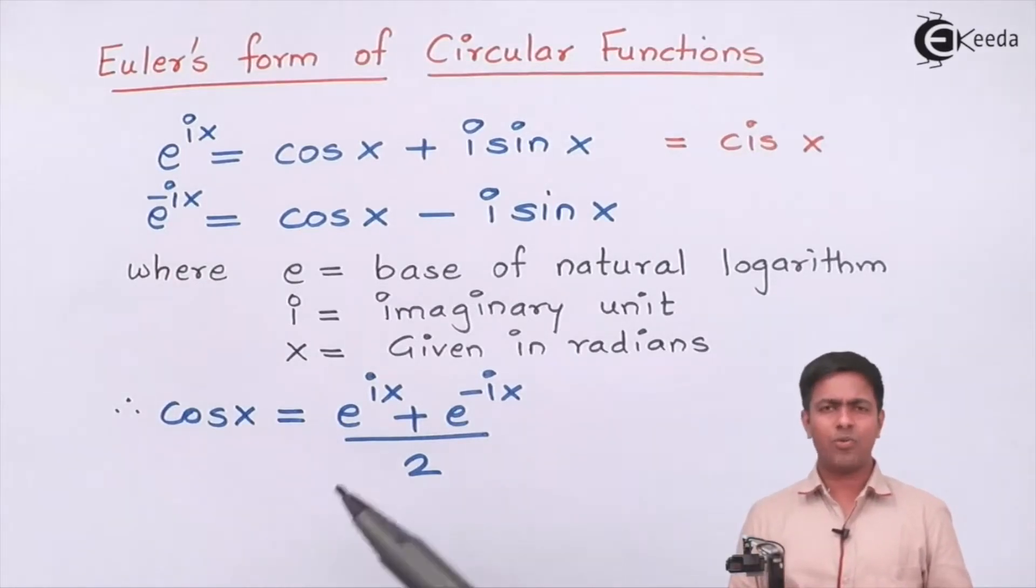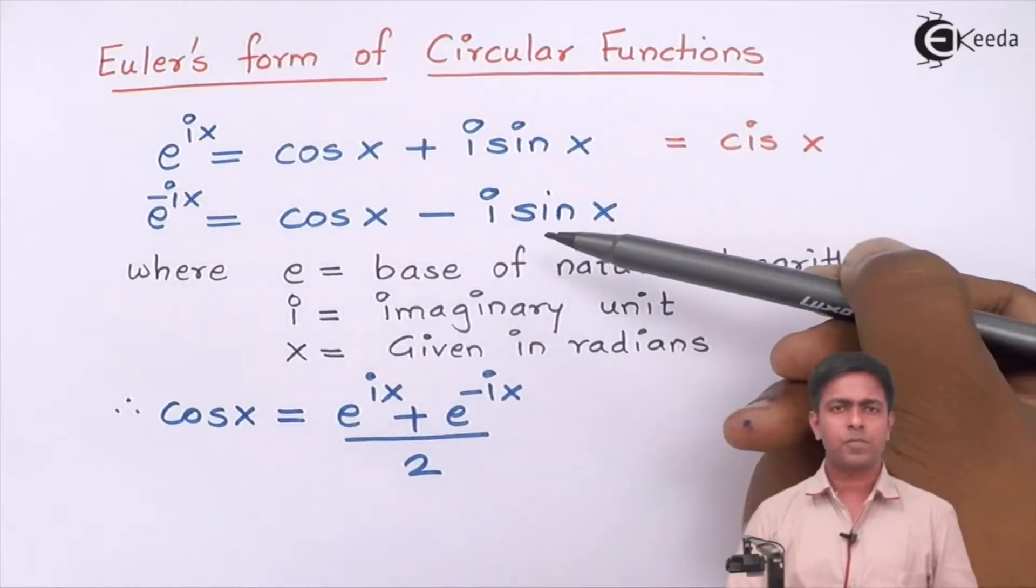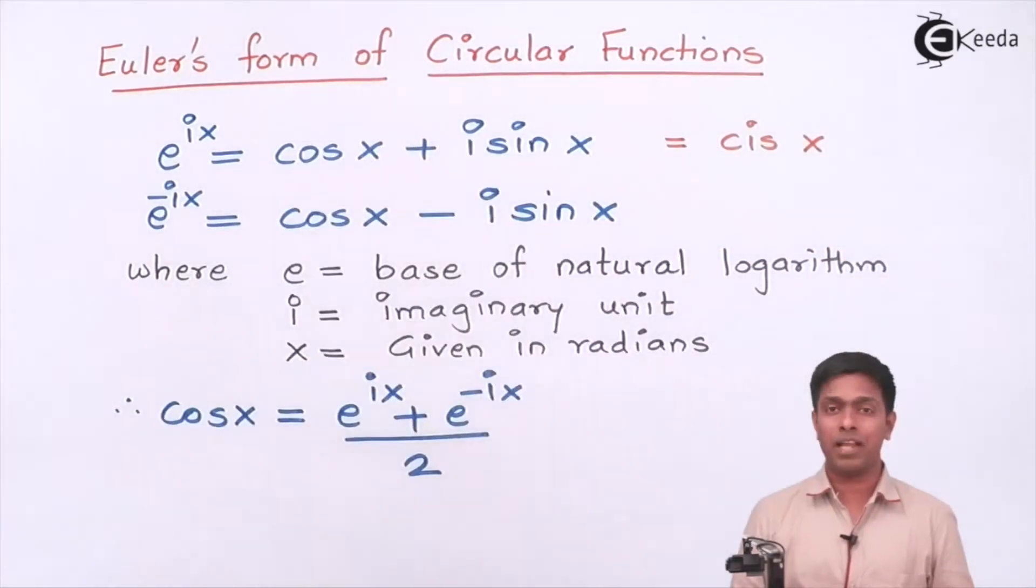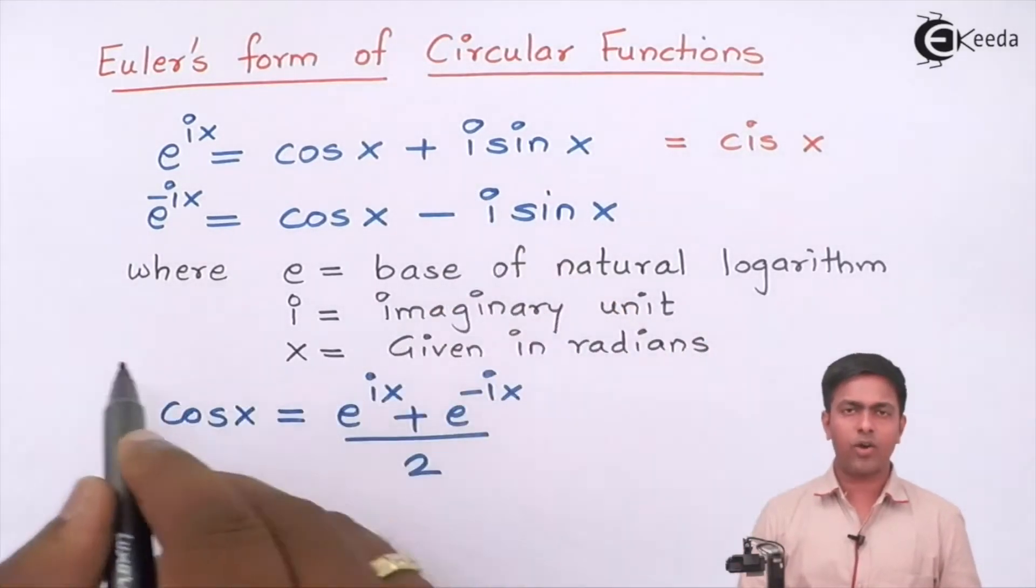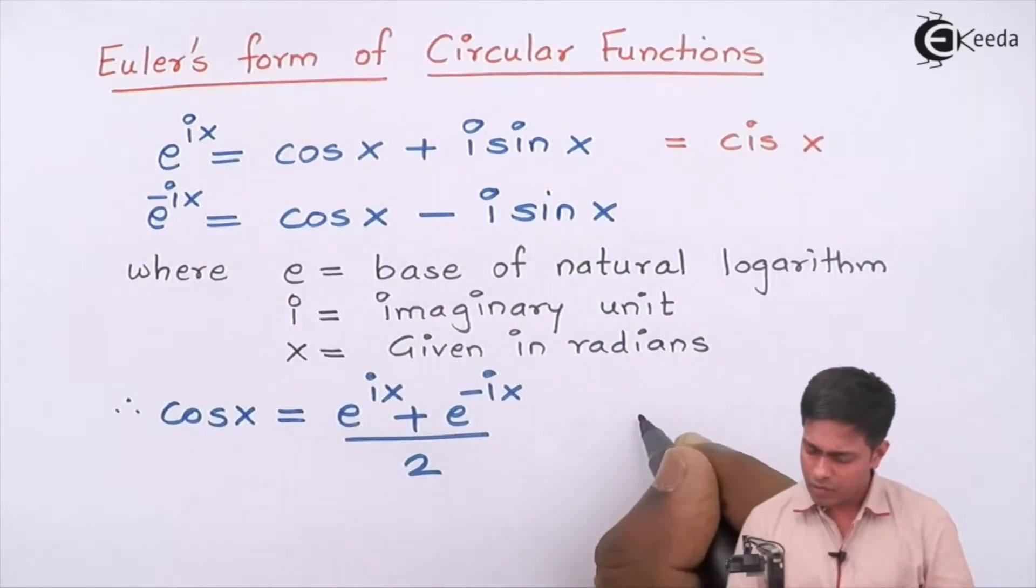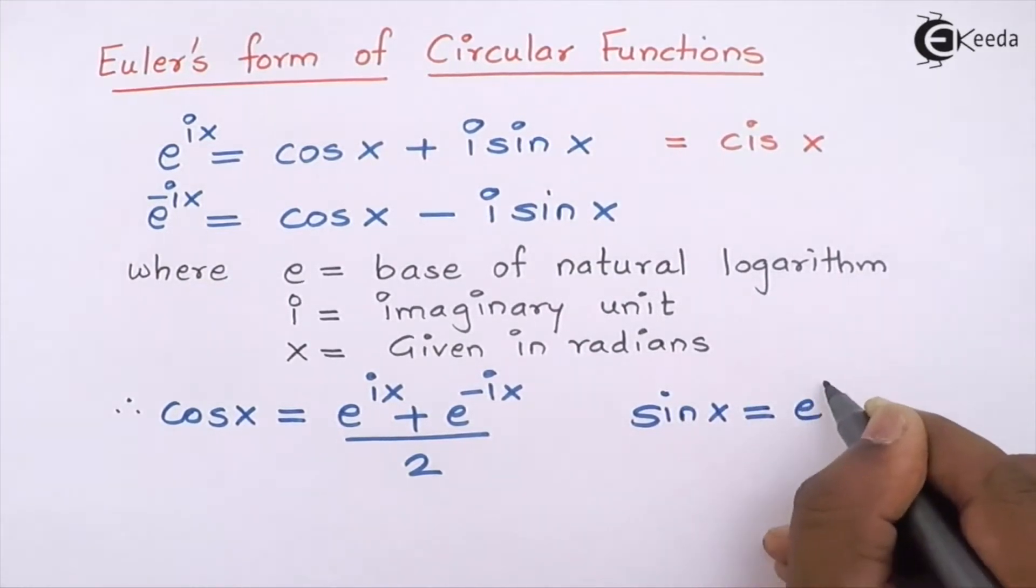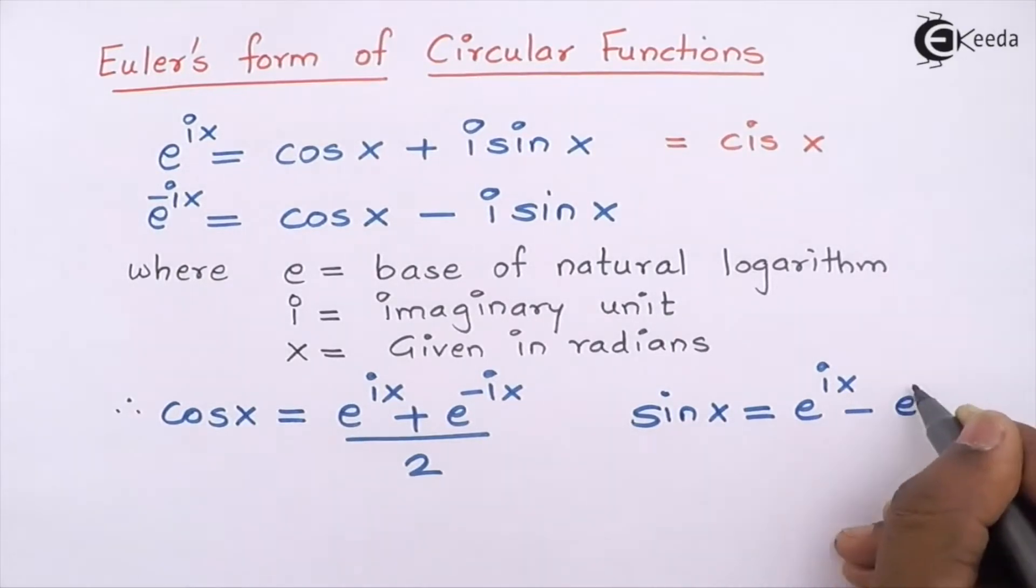We will get 2i sin x, so by shifting 2i to the denominator we get sin x = (e^(ix) - e^(-ix))/2i.